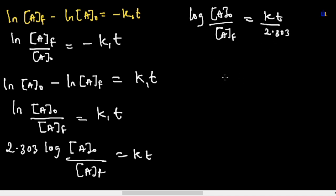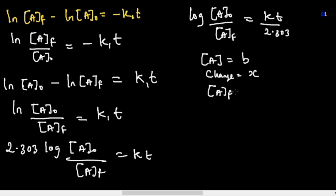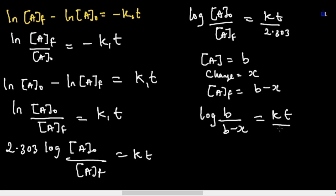The remaining concentration of A is simply the initial concentration minus the change. If we say the concentration of A is b and the change is x, then the remaining concentration is b - x. Substituting into the equation gives us: log(b / (b - x)) = kt / 2.303. That covers the different integrated rate equations for first order.